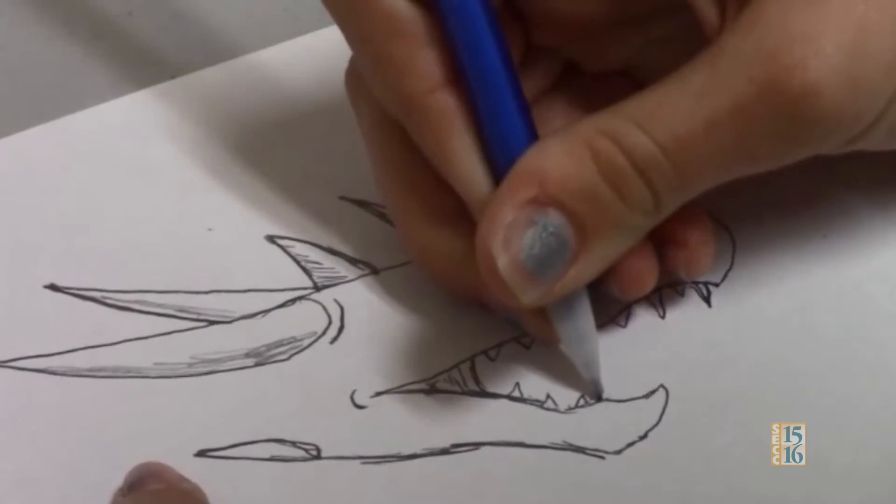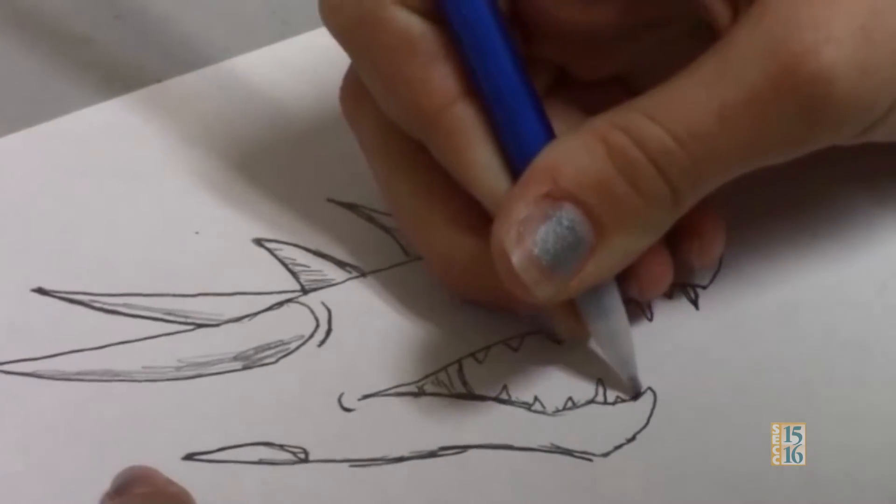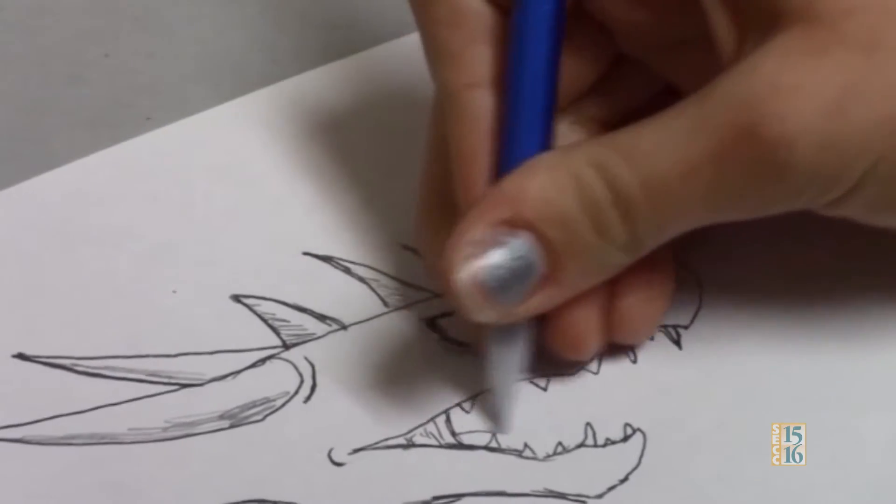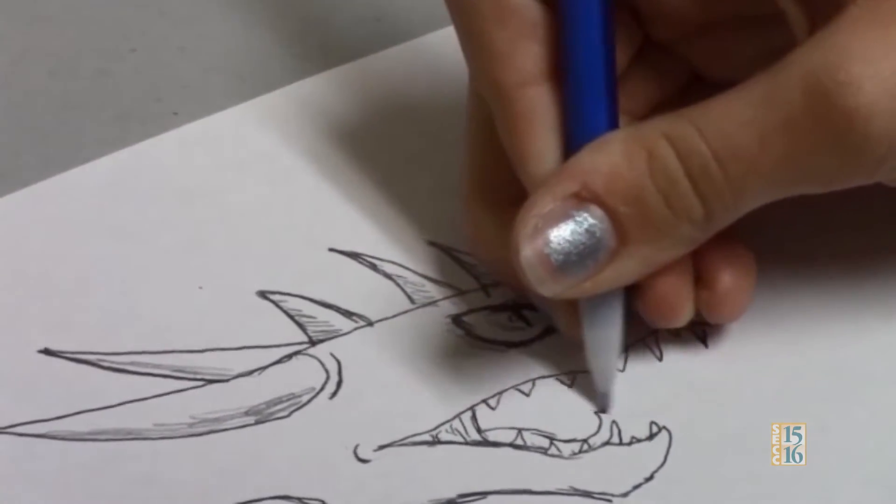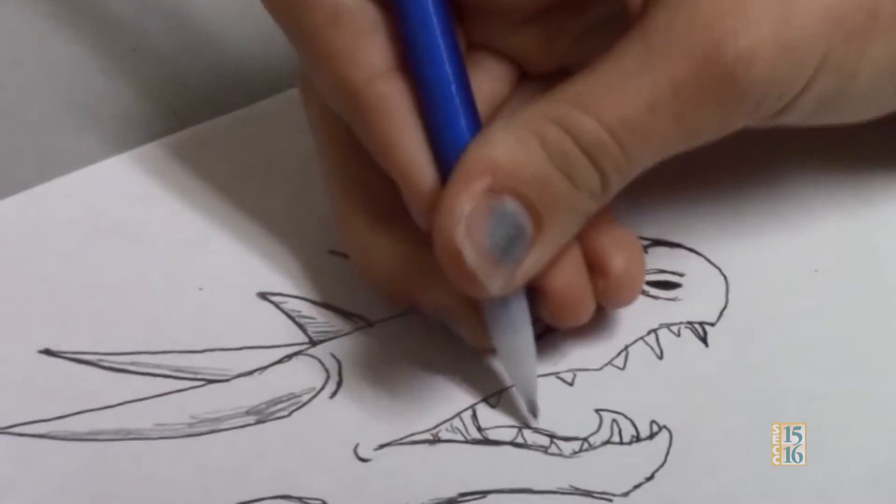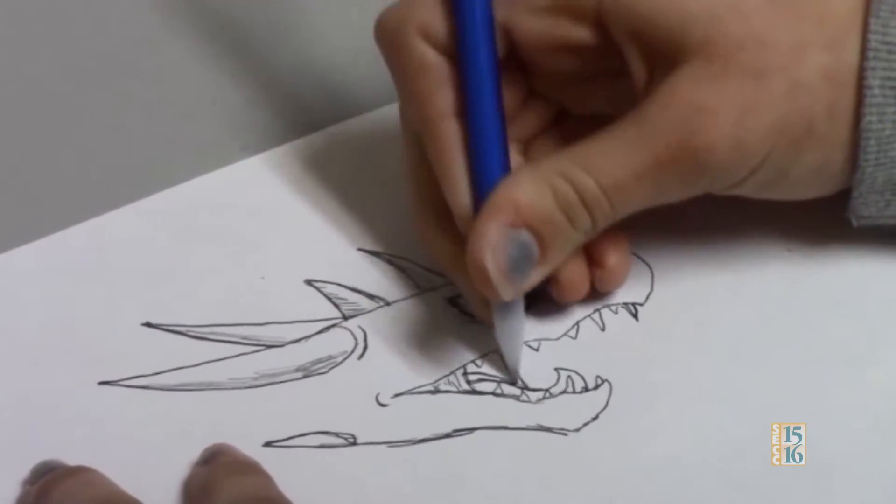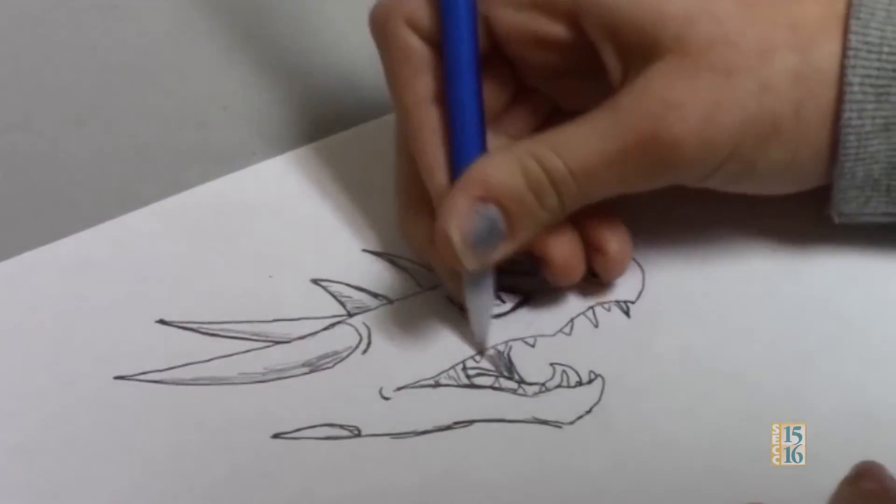And then do the same thing on the bottom. And then you can add a tongue. Like that. And then you can add this in the background, the other side of this part right here. And make it darker.